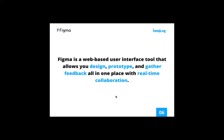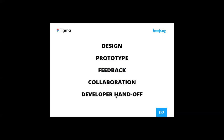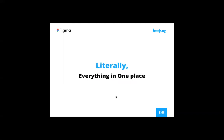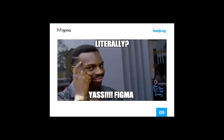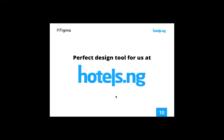We also get to work together with people in real-time. Product development involves many people with different roles, so collaboration is very, very possible. In summary, with Figma you can design, prototype, give feedback, collaborate, and it also supports developer handoff — which is a giant step for designers and developers to continue working together. Everything in one place. That's what makes it the perfect design tool for us at Hotels.ng.